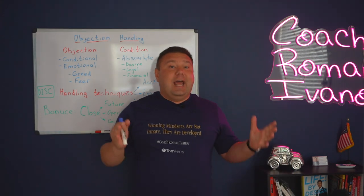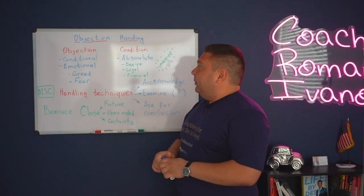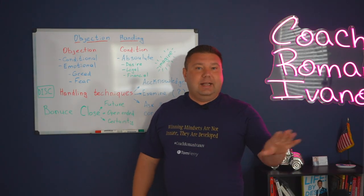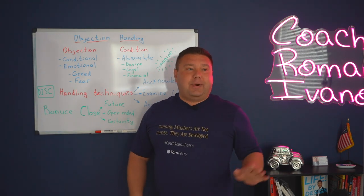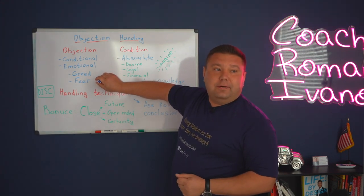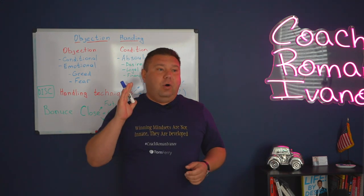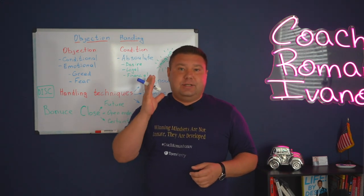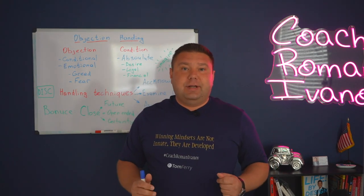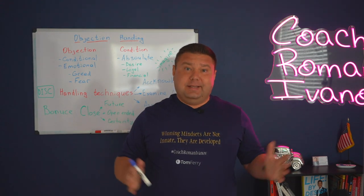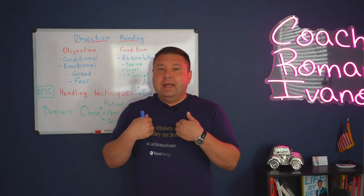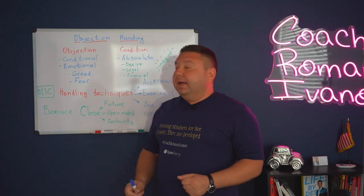Our job as real estate agents is to handle the conditional. We're going to be talking about emotional objections, and they all break down into two categories always. At the end of this call we will be practicing — you'll throw objections at me, and you'll notice they're all based on either greed or fear. These two emotions are what motivate prospects to throw an objection at you. For example, greed: I want to save on commission. I'm greedy. I want to keep all the money in my pocket. Is this bad? No, it's not — everyone wants to keep money in their pocket.